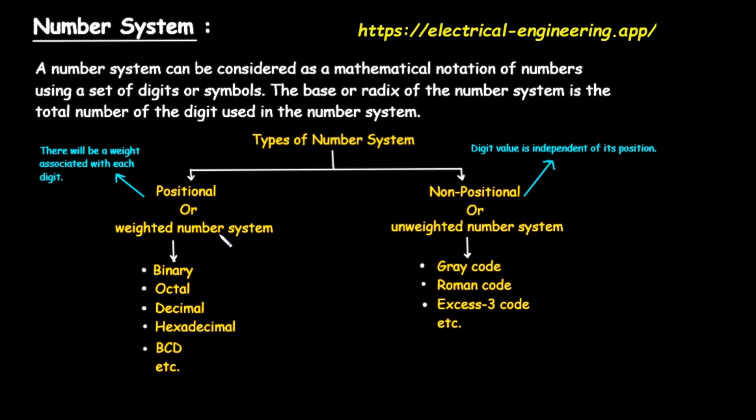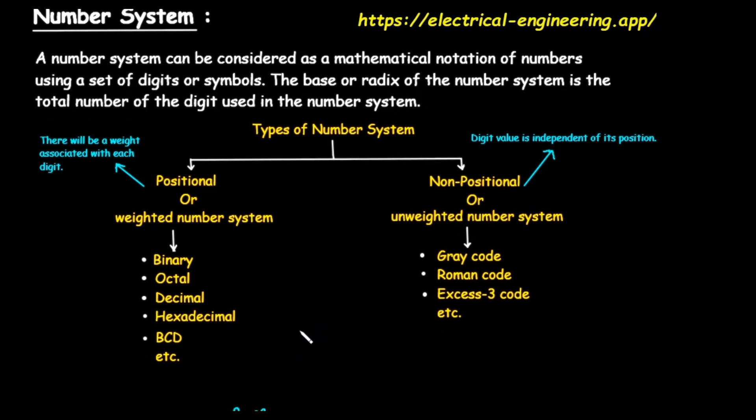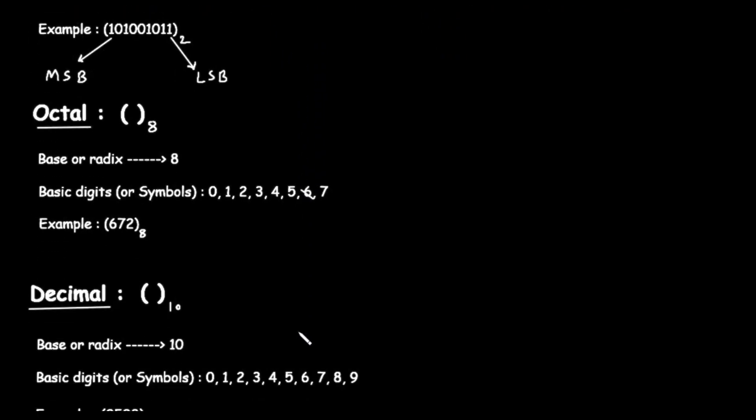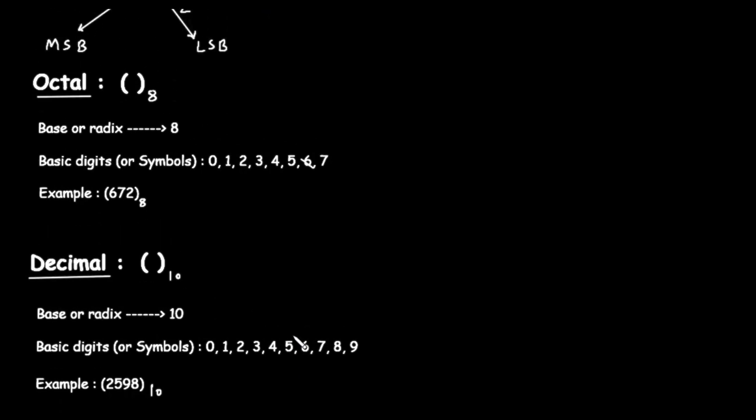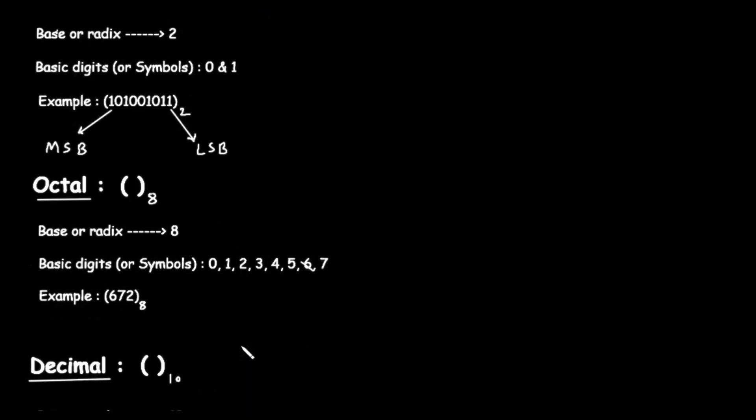The number system we use every day, the decimal system, is a perfect example of a positional system. For instance, in the number 352, the digit 2 just means 2. The digit 5 doesn't just mean 5; because of its position, it means 50. And the digit 3, being in the hundreds place, actually represents 300. Each position—the ones place, the tens place, the hundreds place—has a different weight, and that weight determines the digit's true value.